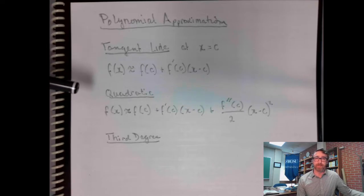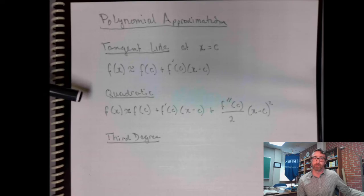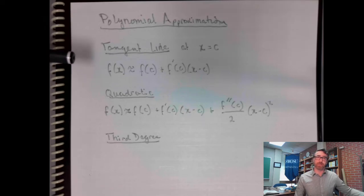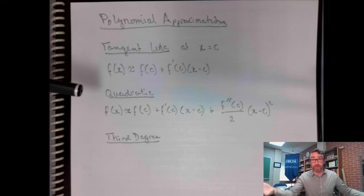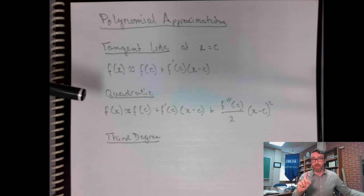Welcome back to Technology and Programming in Mathematics. In our previous video, we discussed the idea of a tangent line approximation for a function. Now, of course, a tangent line is a linear function, it's a line, but a line is a degree 1 polynomial.